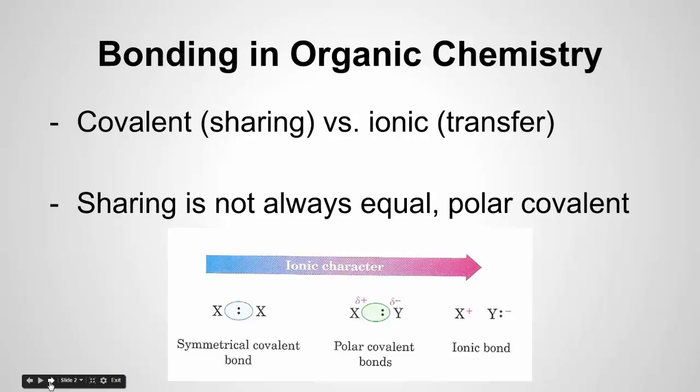Such bonds are known as polar covalent bonds, when the sharing is not equal for the electrons. In a polar covalent bond, electrons are attracted more strongly to an atom than to another. So that would be an unequal electron sharing. You can see in this figure, the ionic character increases as we go from left to right. We have a symmetrical covalent bond, often called a non-polar covalent bond. Symmetrical meaning that the electrons are shared between two symmetrical atoms. There's no difference between them.